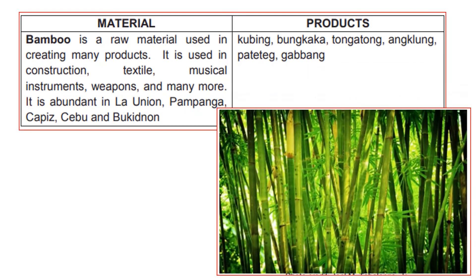Next material is bamboo. It is a raw material used in creating many products. It is used in construction, textiles, musical instruments, weapons, and many more. It is abundant in La Union, Pampanga, Capiz, Cebu, and Bukidnon. Products include musical instruments such as dakubing, bungkaka, tungatong, angklong, pateteg, and dagabang.